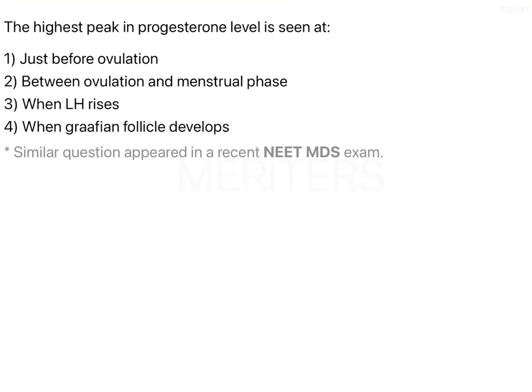The highest peak in progesterone level is seen at: just before ovulation, between ovulation and menstrual phase, when LH rises, or when the Graafian follicle develops?